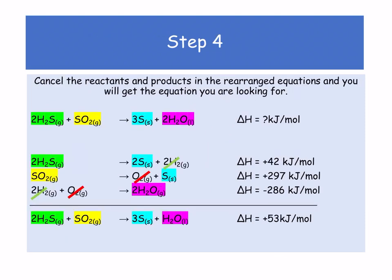Finally, step 4: cancel what we don't need. The hydrogens are cancelled with the green line going through them, the oxygens are cancelled with the red lines. Bring them all together: positive 42, plus 297, minus 572 gives us a delta H of positive 53 kJ/mol. You have to begin at the beginning and start by writing each step out — that's the best way to understand this.